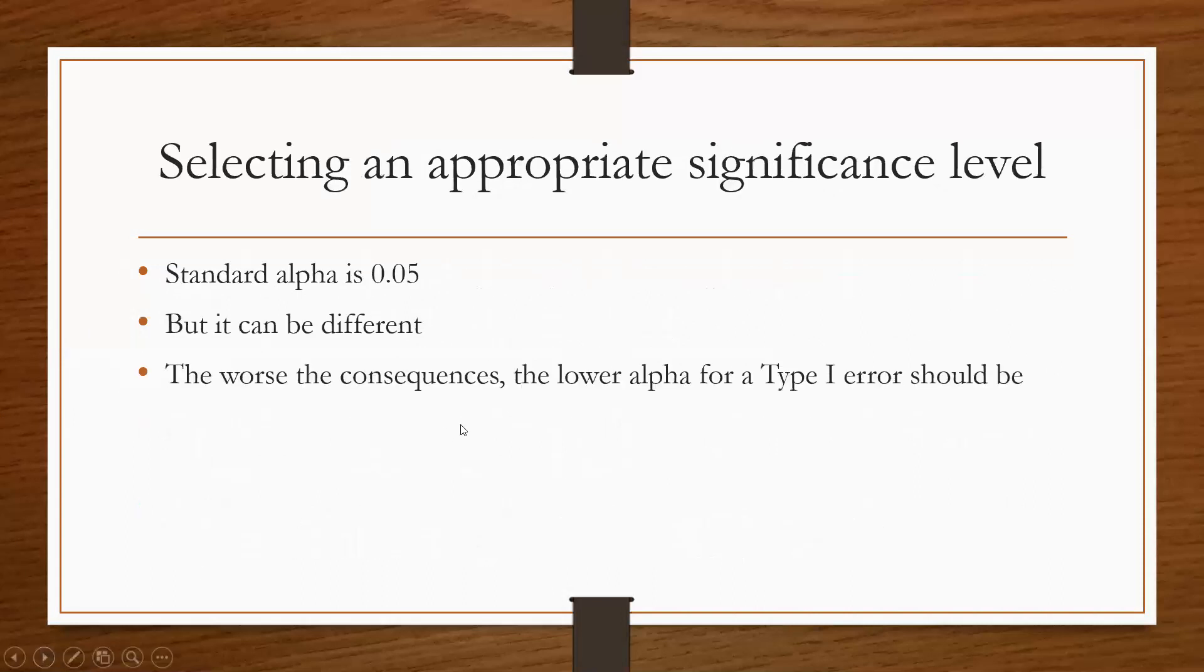Selecting an appropriate significance level for when you're doing these tests is very important. The standard is 0.05. You know, I think that's a very standard level. You guys all probably have it memorized thanks to dealing with p-values and everything. But one of the biggest things is that alpha can be different depending on, well, it can really be made different.